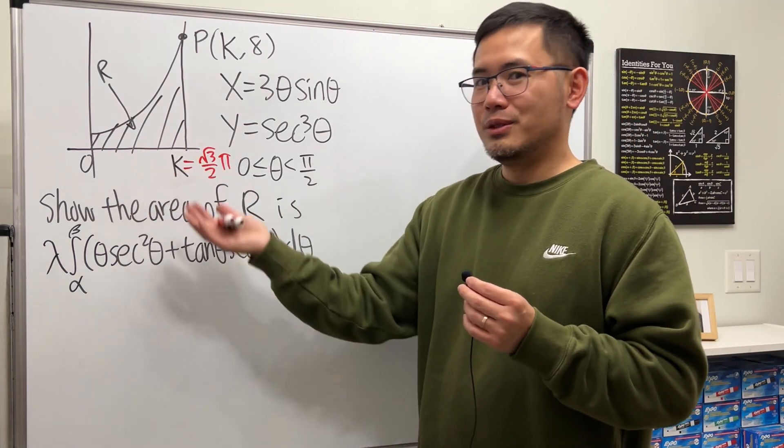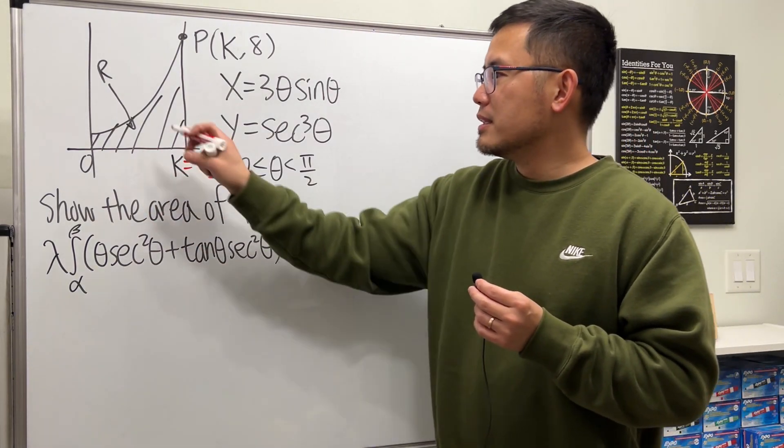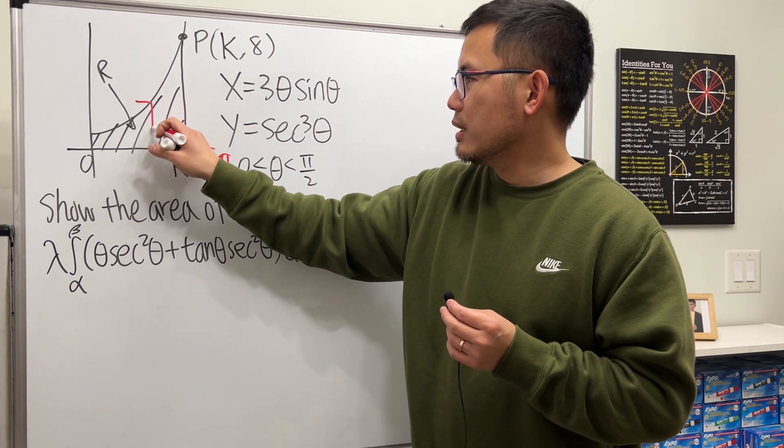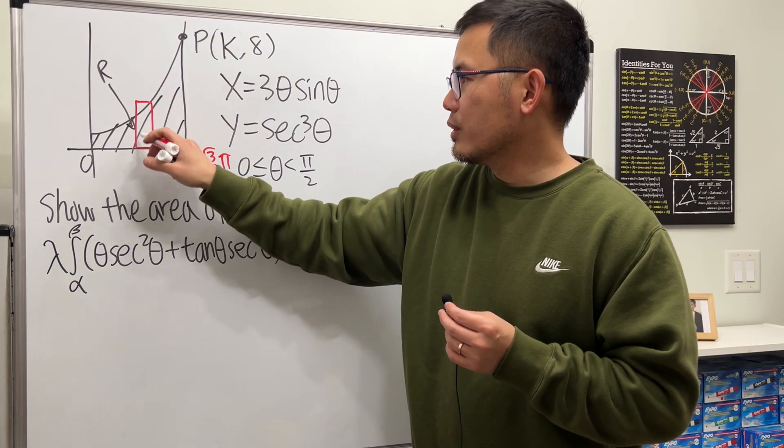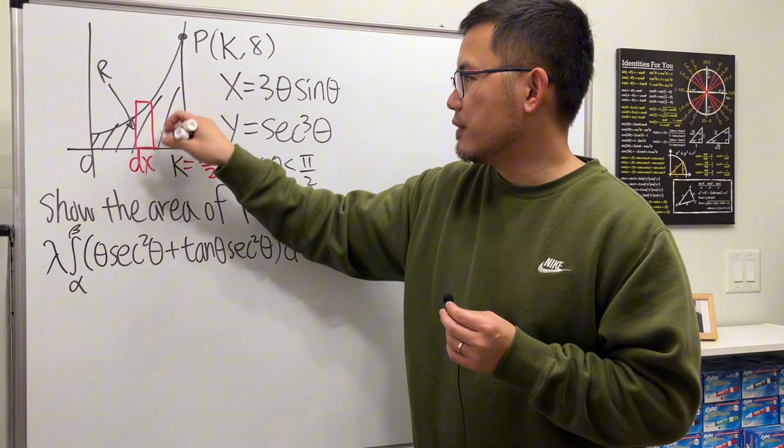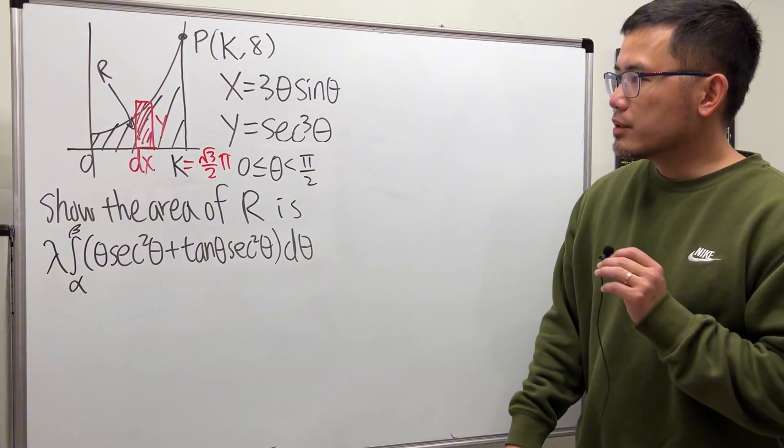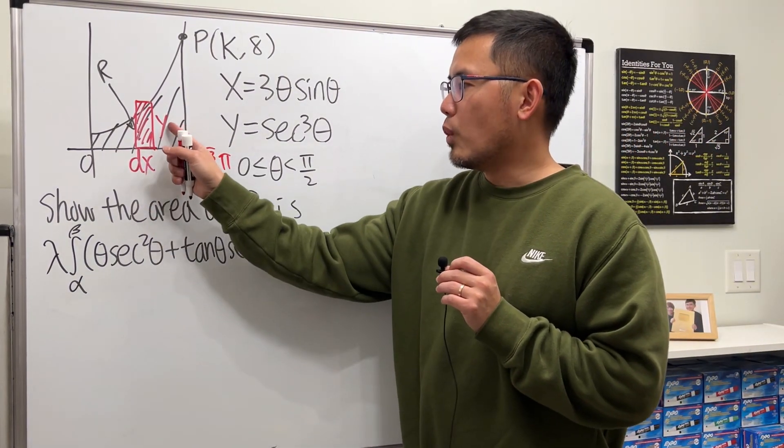Find the area of the region R. Do the same thing that we did earlier: start by drawing a vertical rectangle like this. The base is dx and the vertical distance is y, so the area of this rectangle is just y times dx.